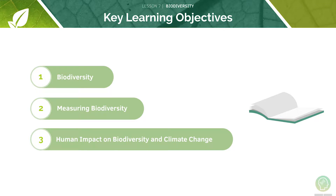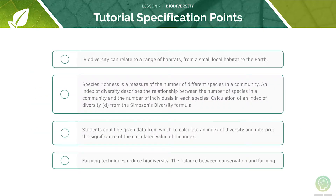Here are the key learning objectives for today's lesson. First we will look at biodiversity, then at how to measure it, and finally the human impact on biodiversity and climate change. Here are the AQA specification points for today's lesson — feel free to pause the video now and have a quick read through them before we begin.